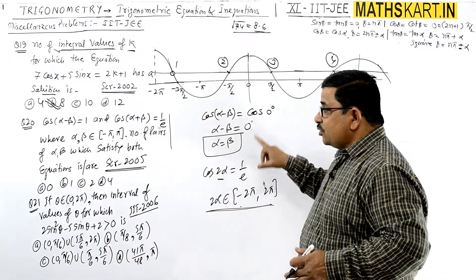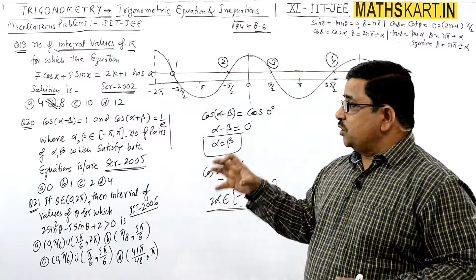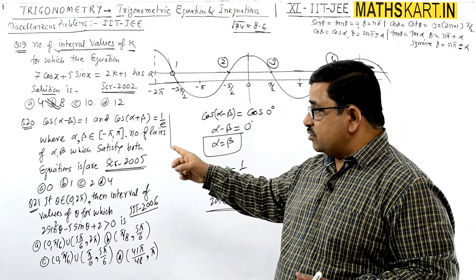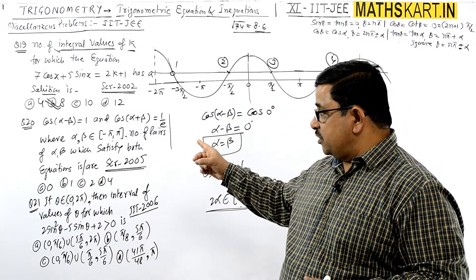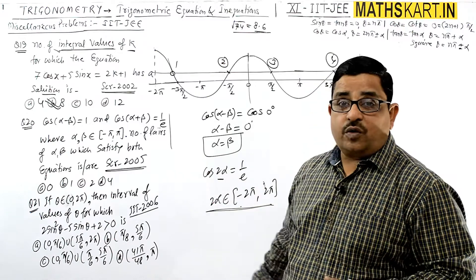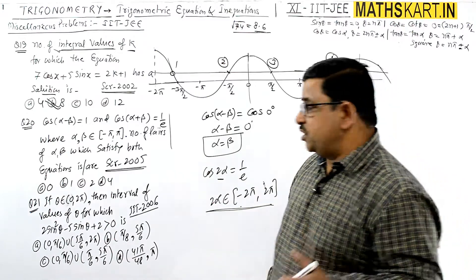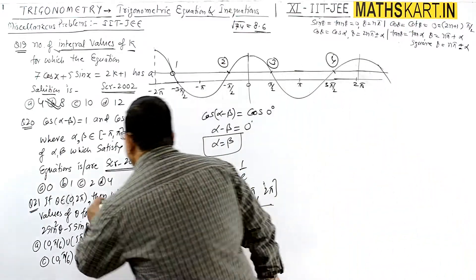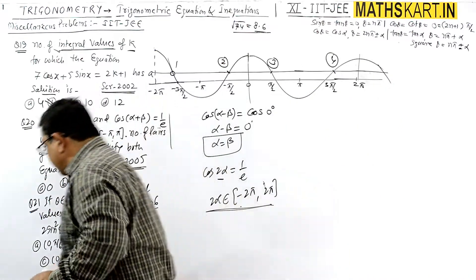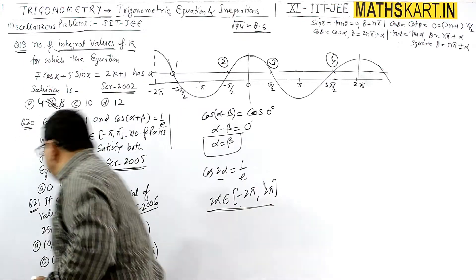So the number of pairs of α,β which satisfy both equations is 4. Option D is correct.